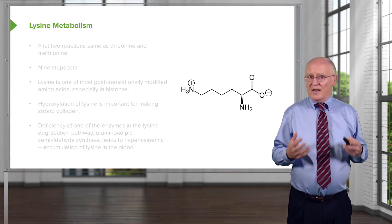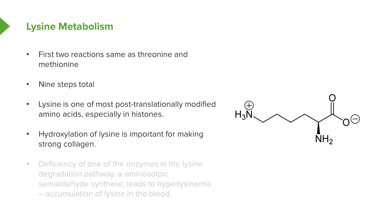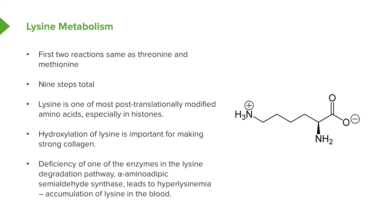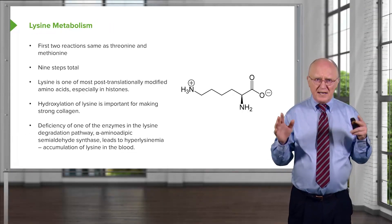Lysine is made in another set of very complicated reactions. The first two reactions are the same as threonine and methionine metabolism. There are a total of nine steps, which I'm not going to step through all of here. Lysine is one of the most post-translationally modified amino acids. The modifications that happen to lysine allow for so many things to happen in cells. The hydroxylation of lysine is important for making strong collagen. A deficiency of the enzyme alpha-aminoadipic semialdehyde synthase leads to hyperlysinemia, which leads to accumulation of lysine in the blood with some very severe consequences.